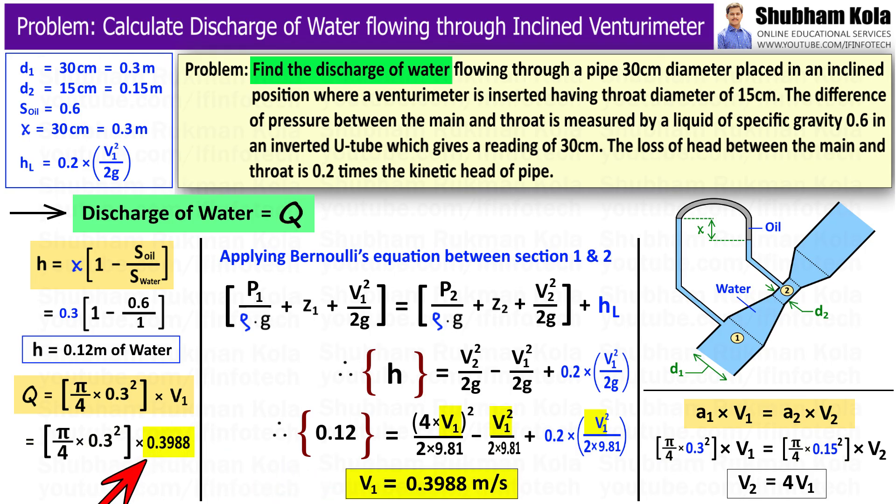Now I will put this calculated value of v1 in the discharge formula. By calculating this, we get discharge of water flowing through the pipe equal to 0.02819 cubic meters per second.